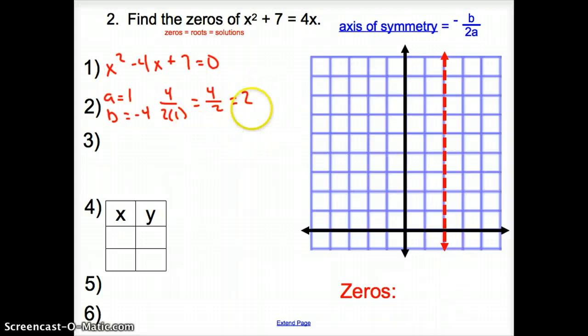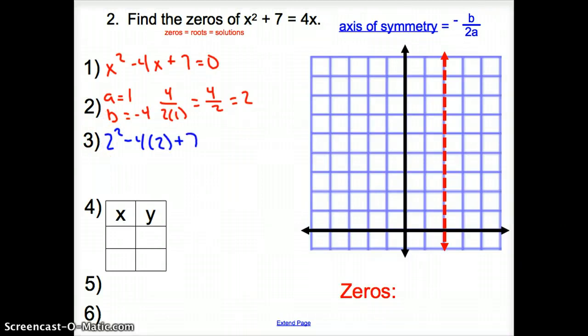Now I plug this 2 in for my equation. I'm going to do 2 squared minus 4 times 2 plus 7. Simplifying, it's 2 squared, which is 4, minus 8 plus 7. That gives me 3. So I'm going to put 3 right on my axis of symmetry. I have a vertex of 2, 3.